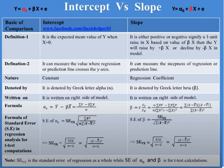Formulas of intercept alpha and slope beta are given for comparison. Formulas of standard error in regression analysis for t-test computations regarding intercept and beta are also given for comparison. It is important to note that SE of YX is the standard error of regression as a whole, while SE of alpha and beta is for t-test calculations.